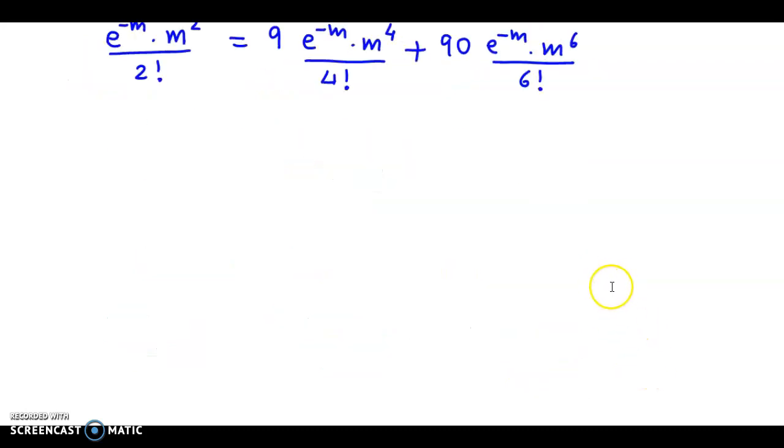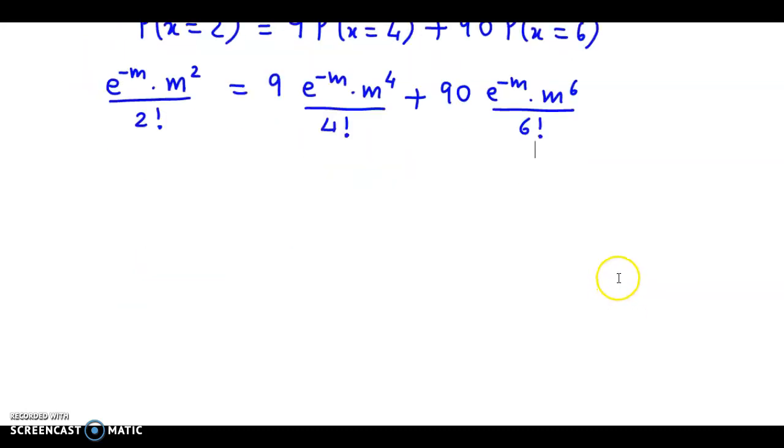So if we simplify this, we divide throughout by e^(-m). Dividing throughout by e^(-m), the terms become m^2 / 2, where 2 factorial is 2,